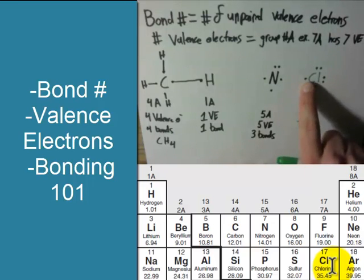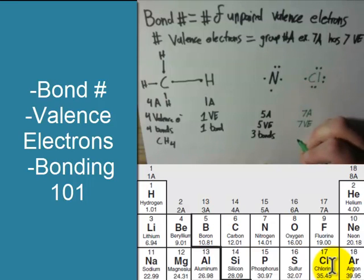Okay, how many of them are not paired up? One. There's one unpaired electrons, that means chlorine is going to make one bond.